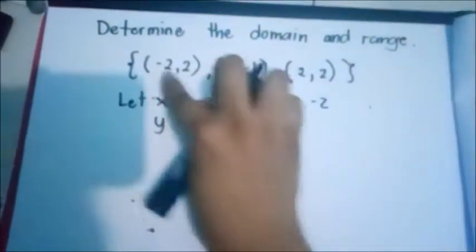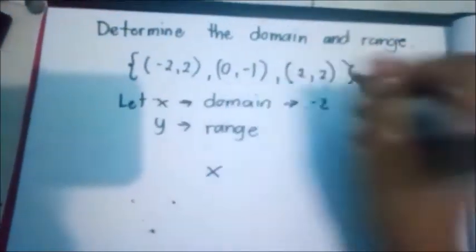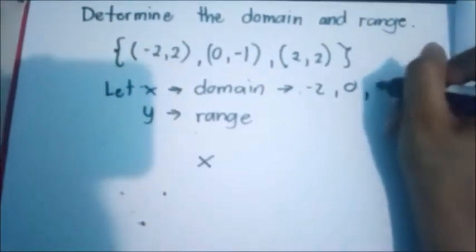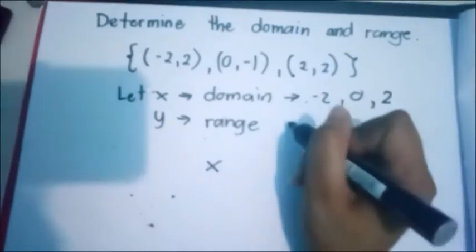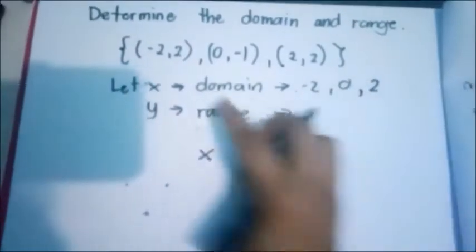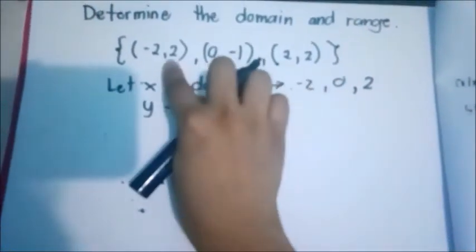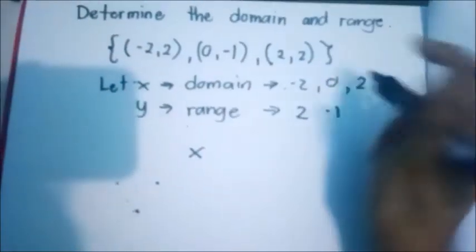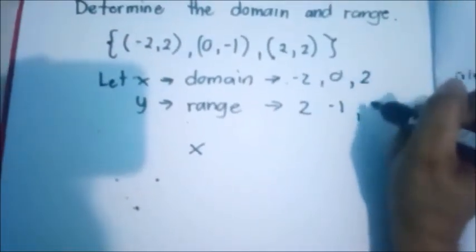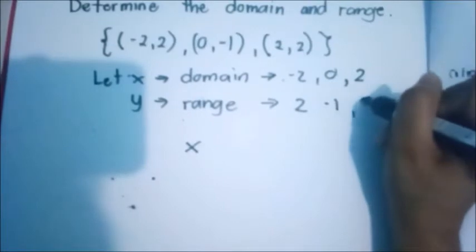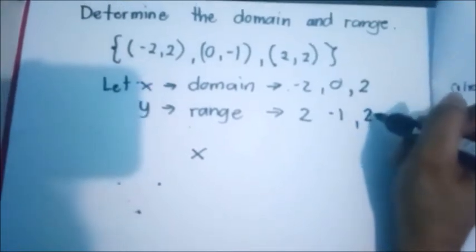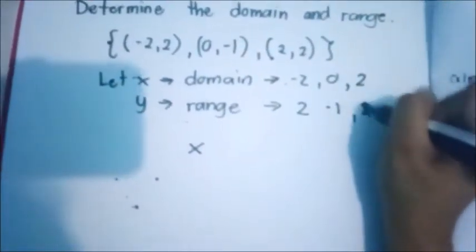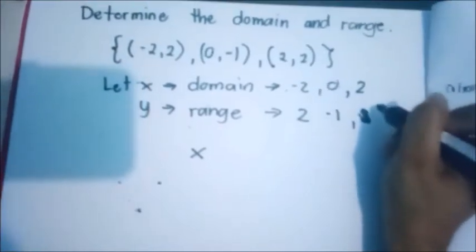So we have negative 2, 0, and positive 2. How about the range? Our range is 2, negative 1, and another 2. Because it is the same 2, just cross it out.